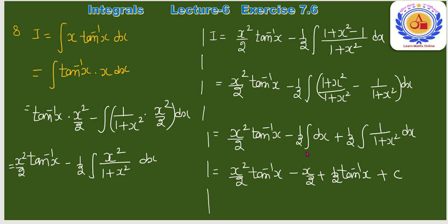Separate करके: x²/2·tan⁻¹(x) − (1/2)[∫1 dx − ∫1/(1+x²)dx]। = x²/2·tan⁻¹(x) − x/2 + (1/2)·tan⁻¹(x) + C। यही question number 8 का final answer है।